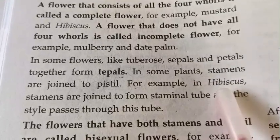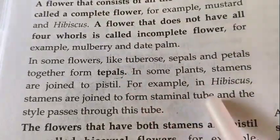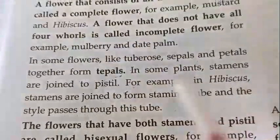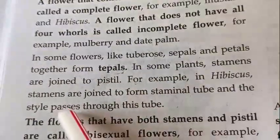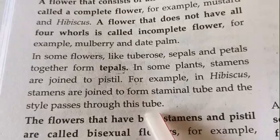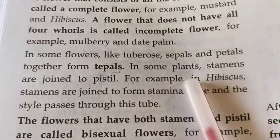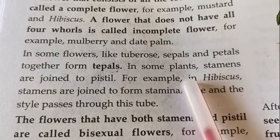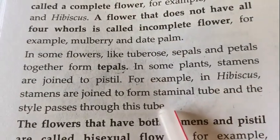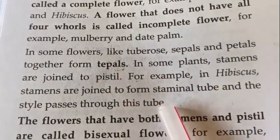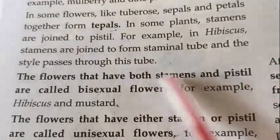In some plants, stamens are joined to the pistil — for example, in hibiscus. The stamens are joined to form a staminal tube, and the style passes through this tube. So in some flowers like hibiscus, the stamens are attached to the pistil.